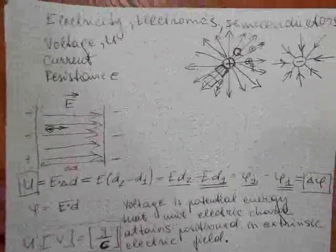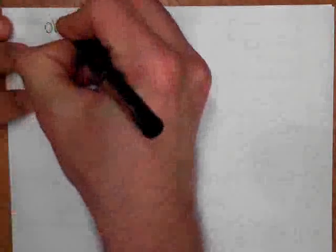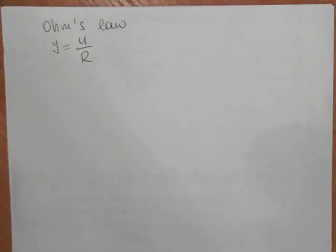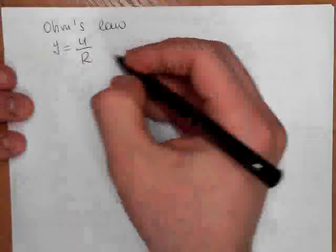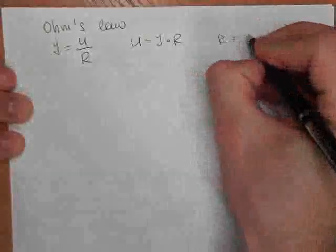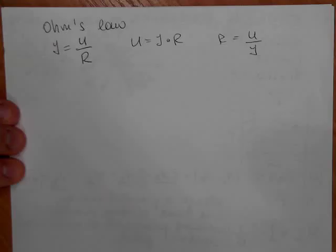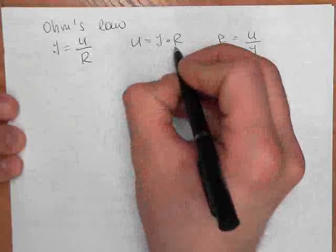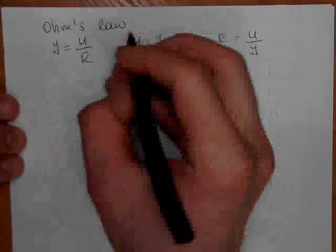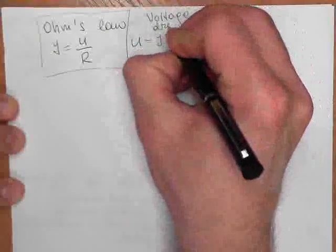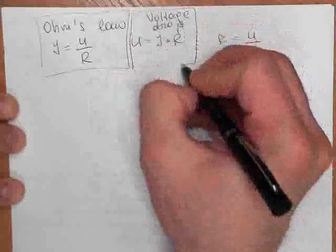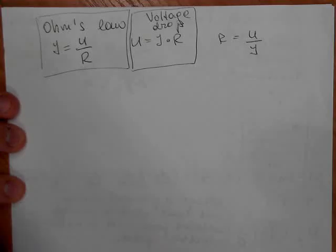Now let's move forward with something called Ohm's law. Ohm's law is written as I equals U over R — current is voltage divided by resistance. From this formula we can also write U equals I times R, and R equals U divided by I. The formula U equals I times R is called the voltage drop, and it is derived from Ohm's law. The formula R equals U over I is just how to calculate resistance.